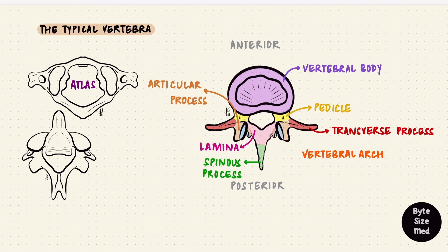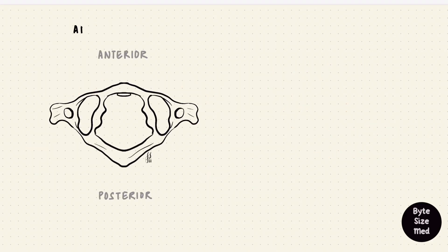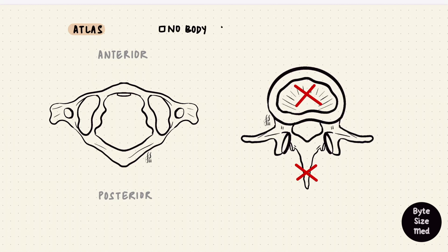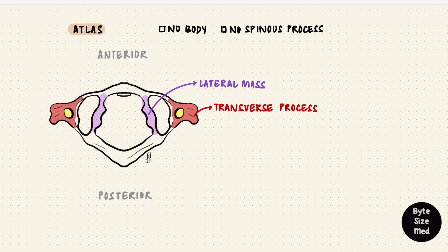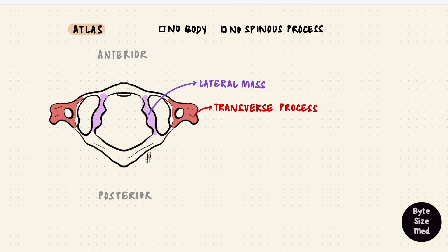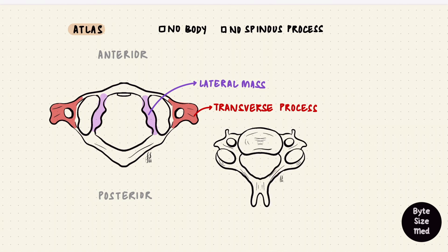Now we see what's different in atlas and axis. They already look quite different, but let's start with atlas. Atlas is C1, the first cervical vertebra. The most obvious difference is that it doesn't have a body and it doesn't have a spinous process — it's more like a ring. Instead of a body, it's got two lateral masses. From each lateral mass there is a transverse process. Each transverse process has a foramen transversarium, because these are cervical vertebrae that allow the vertebral vessels to pass through. Because of that lateral mass, the transverse processes are placed further away than in typical cervical vertebrae, making atlas the widest of the cervical vertebrae.